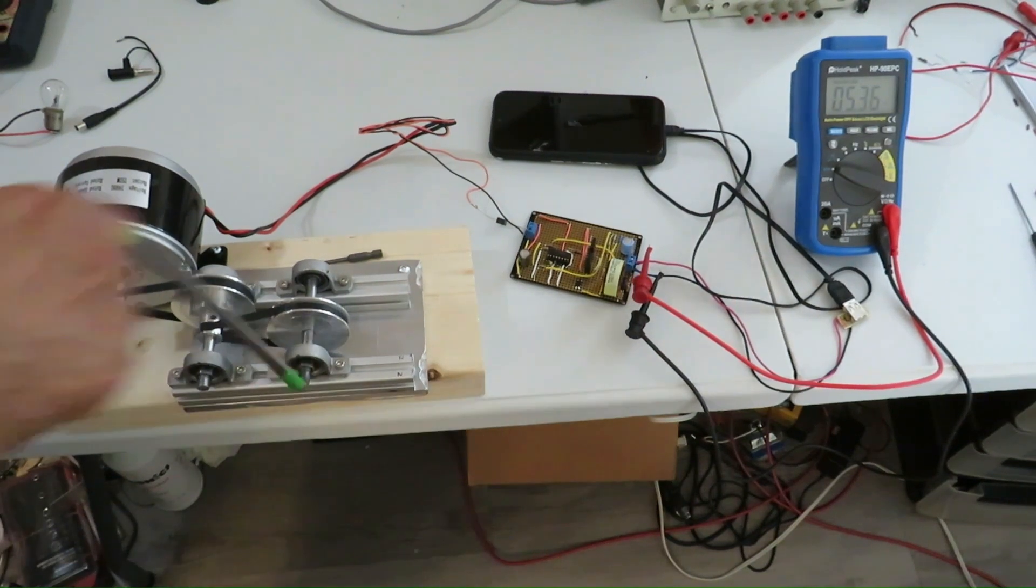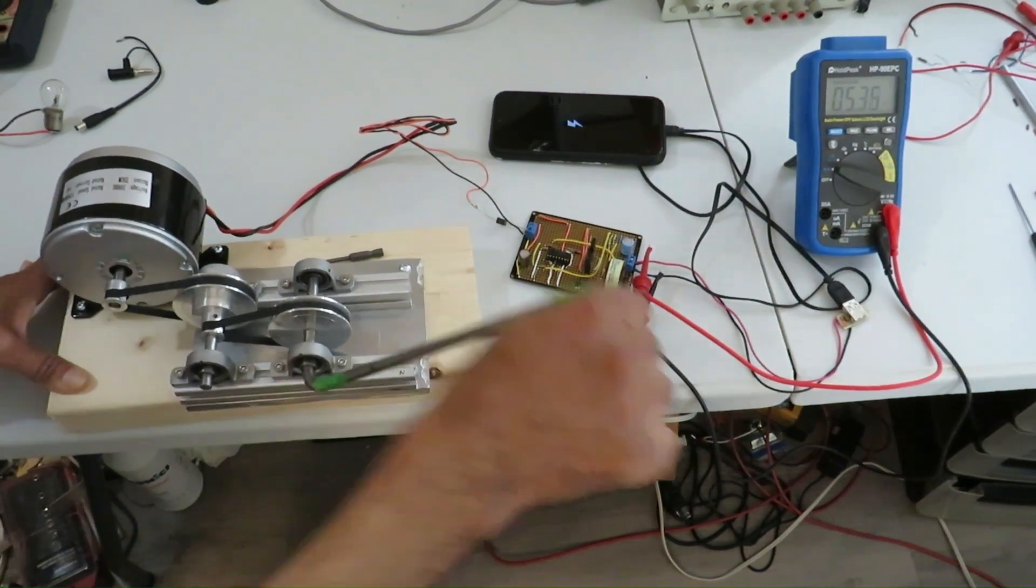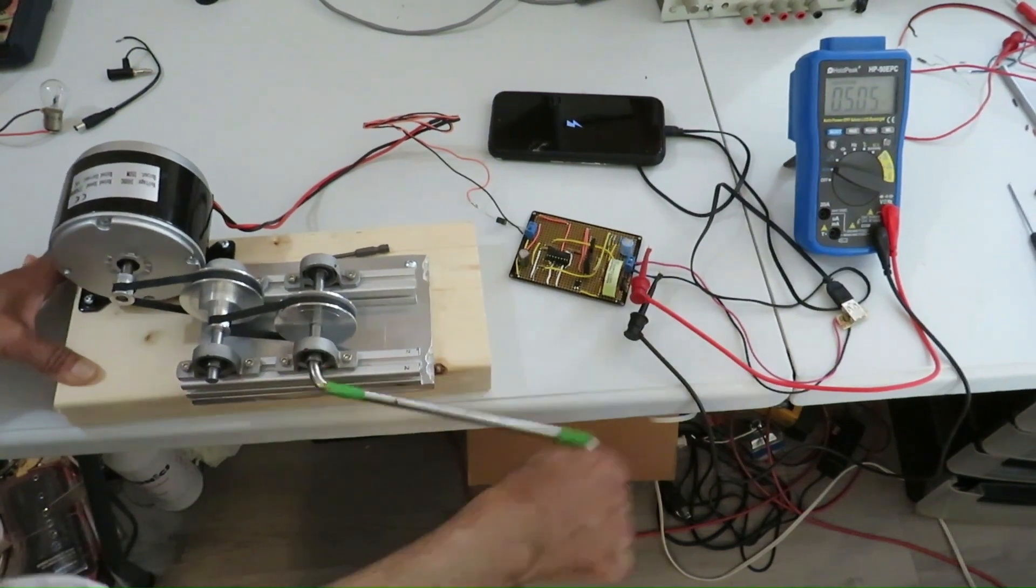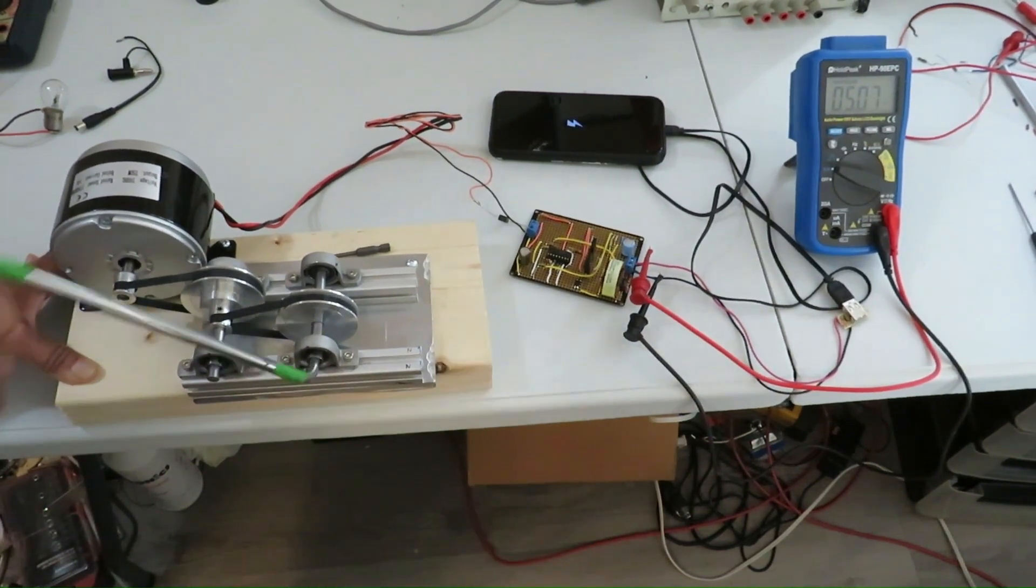Now I am charging a cell phone, connecting the output 5 volts to this cell phone charging input. You can see the power of the generator.